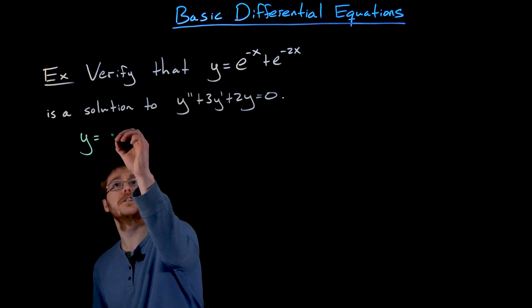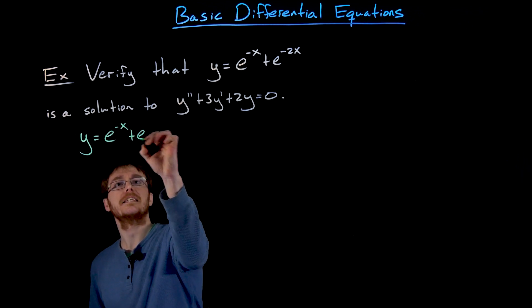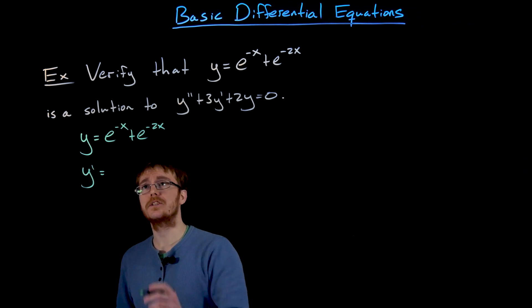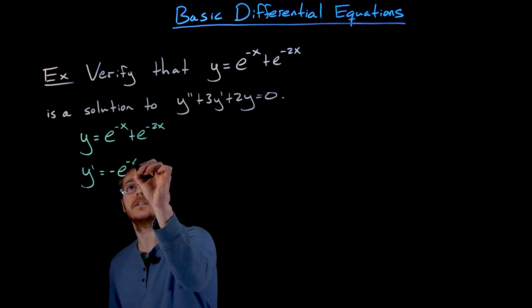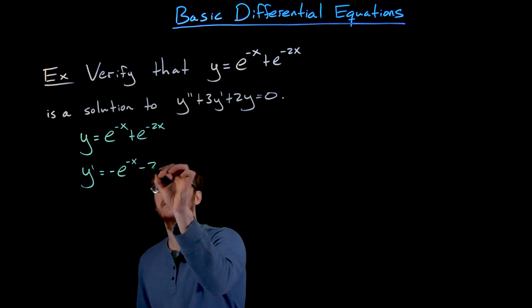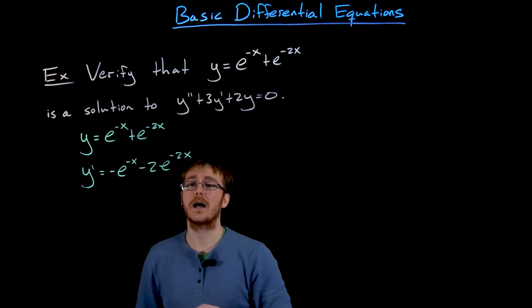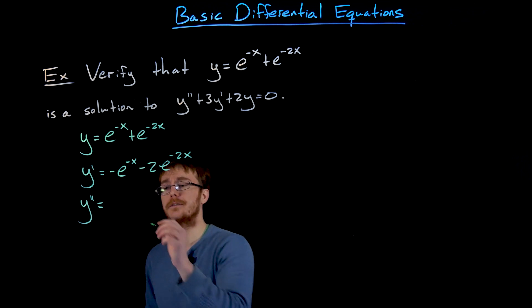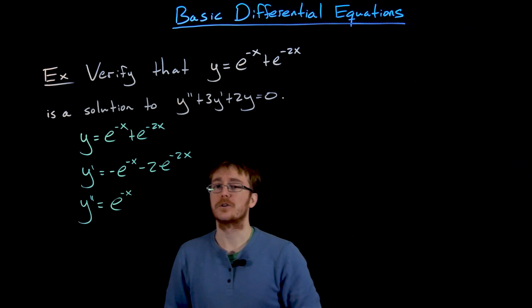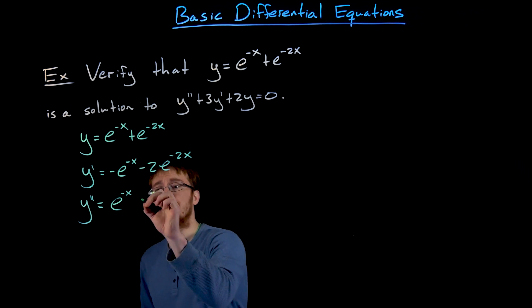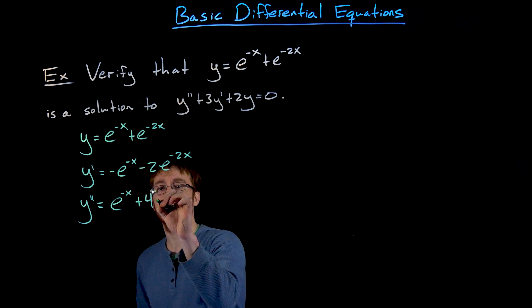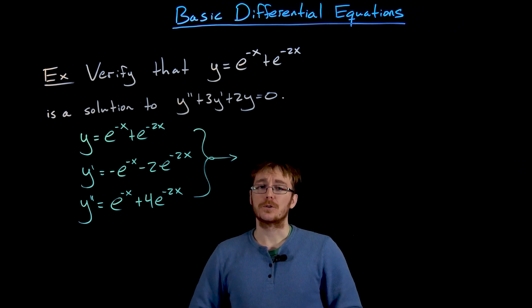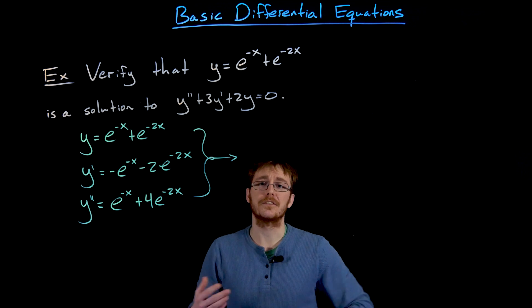Our original function is e to the negative x plus e to the negative 2x. We need the first and second derivative to plug into our differential equation. Differentiating once using the chain rule, the first derivative is negative e to the negative x minus 2 times e to the negative 2x. Differentiating again to get the second derivative, the first term gives e to the negative x and the second term gives positive 4 times e to the negative 2x. Now we have our function and both derivatives ready to plug in.